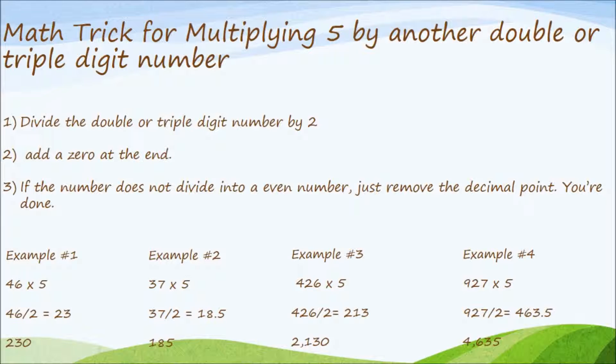Here's our first example. We have 46 times 5. We're going to divide 46 by 2, which is equal to 23. Now we're going to add a 0 at the end. Final answer, 230.